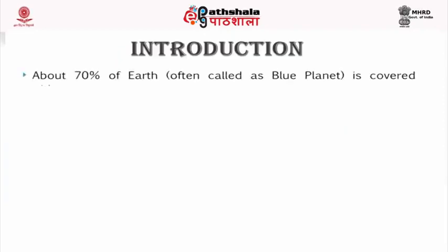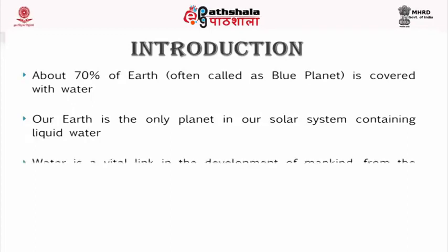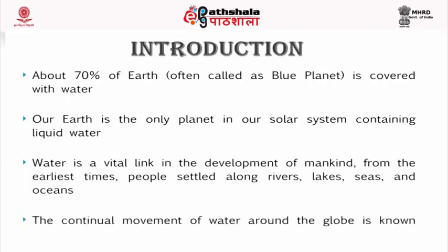About 70% of the Earth, often called the blue planet, is covered with water. Our Earth is the only planet in our solar system which contains liquid water. Water is a vital link in the development of mankind. From the earliest times, people settled along rivers, lakes, seas, and oceans. The continual movement of water around the globe is known as the hydrological cycle.